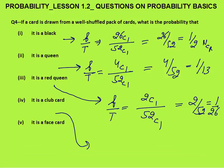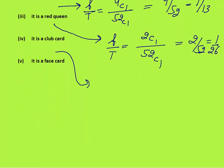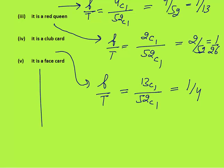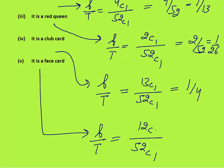Fourth: the card is a club card. Club cards total thirteen, so any one can come — favorable by total gives 1 by 4. And the last: a face card. Total 52C1. Face cards are twelve — Jack, Queen, and King for each of the four suits — so 12C1 favorable. Answer is 12 by 52, that is 3 by 13.